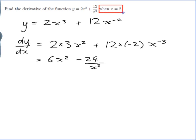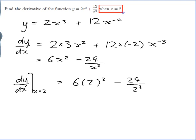So I need to sub 2 into my formula to find the answer. So dy on dx when x is equal to 2 is equal to 6 times 2 squared minus 24 on 2 cubed. Which is 6 times 4 minus 24 on 8, which is 24 minus 3, which is 21.